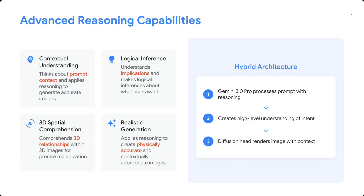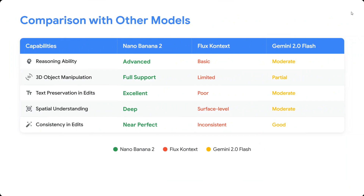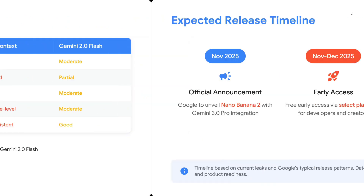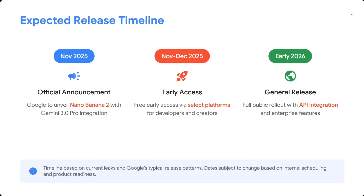It would have a hybrid architecture — Gemini 3.0 Pro processes the prompt with reasoning, creates a high-level understanding of the intent, and then diffusion heads render the image with context. Comparisons with other models suggest reasoning ability would be quite advanced, 3D object manipulation would have full support, text preservation and edits would be excellent, spatial understanding would be deep, and consistency in edits would be near perfect.